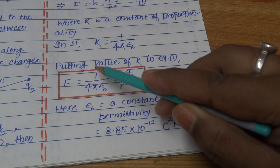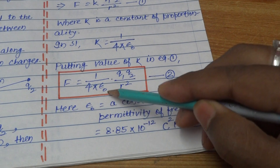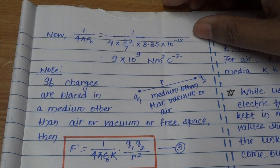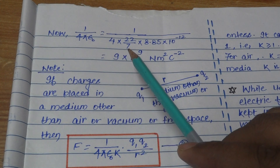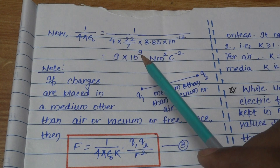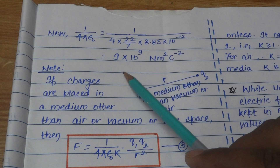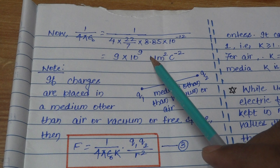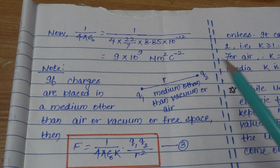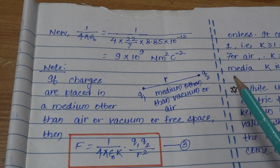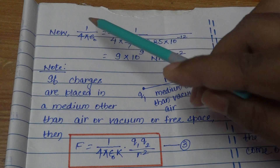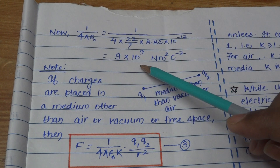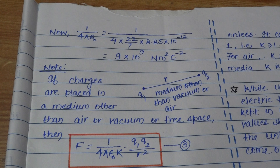Now let us calculate the value of 1 by 4 pi epsilon naught. Putting the values of pi and epsilon naught into the expression and solving, we get 9 × 10⁹ newton meter squared per coulomb squared. So the final formula is F = (1 / 4πε₀) × Q1 Q2 / R², and the value of 1/4πε₀ is 9 × 10⁹ N·m²/C².